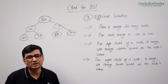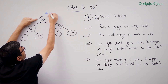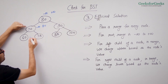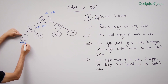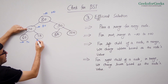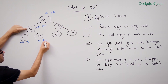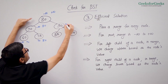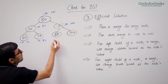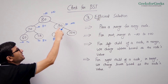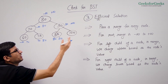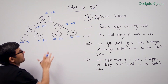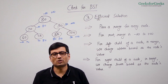Let's do one more example. For the root the range is minus infinity to plus infinity. Going left the range becomes minus infinity to 80. Going further left it becomes minus infinity to 70. Going to the right of that node it becomes 70 to 80. Every node falls within its range so there's no issue. Going right from the root gives 80 to plus infinity. Going right again gives 90 to plus infinity, while going left gives 80 to 90. Every value is within its passed range, so the tree is a BST and our code returns true.